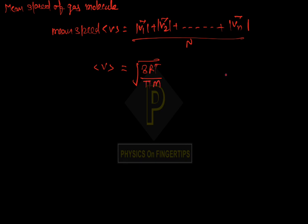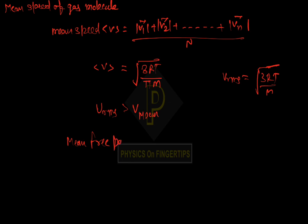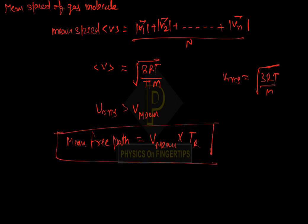Let's compare: V RMS value is root of 3RT by m, and V mean value is under root of 8RT by pi m. Since the value of under root 8 upon pi is less than root 3, we can say that V RMS is greater than V mean. Also, the formula for mean free path equals V mean into time of relaxation. Remember this formula as direct questions are formed from it.